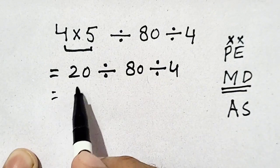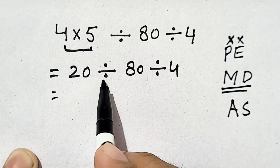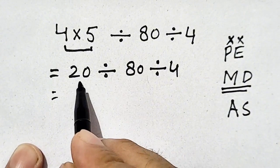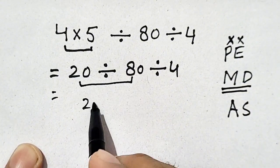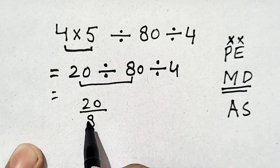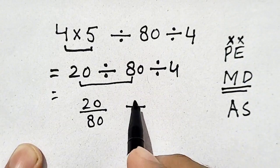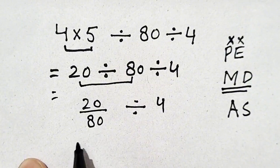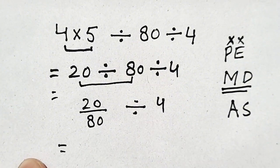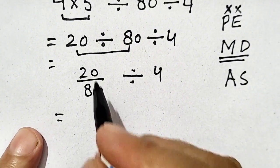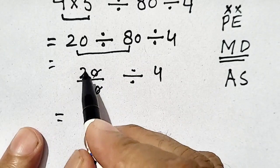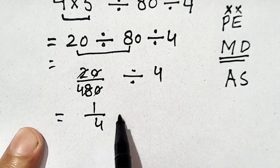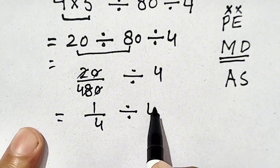Now 20 divided by 80 can be written as 20 divided by 80 divided by 4. Now 20 divided by 80 equals 1/4. So it will be 1 by 4 divided by 4.